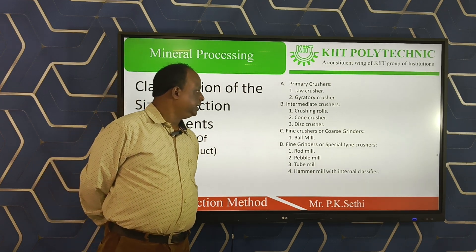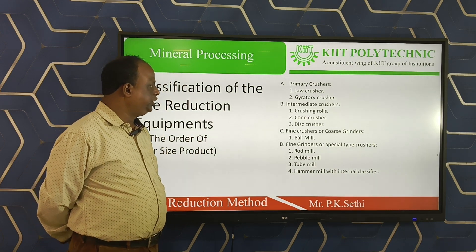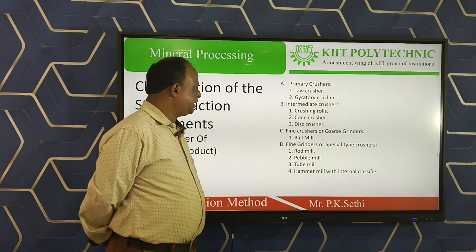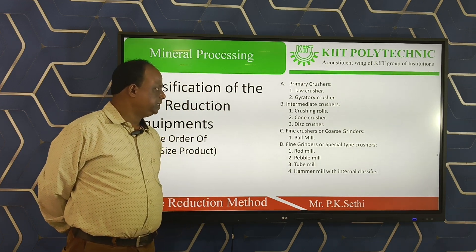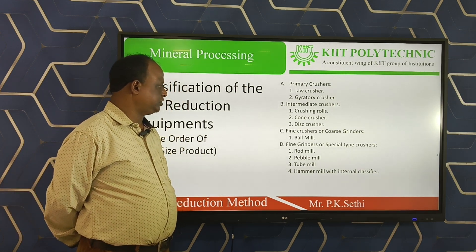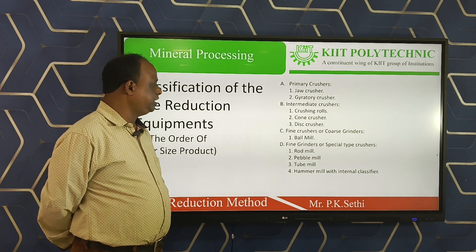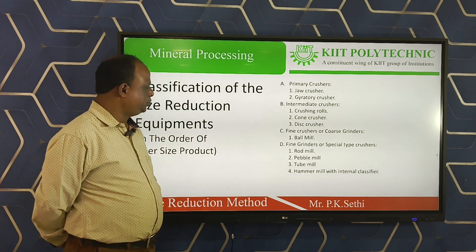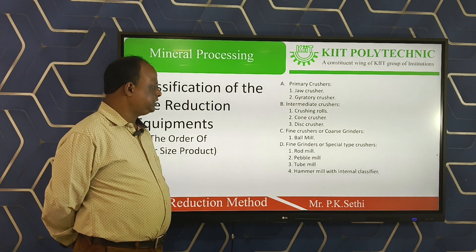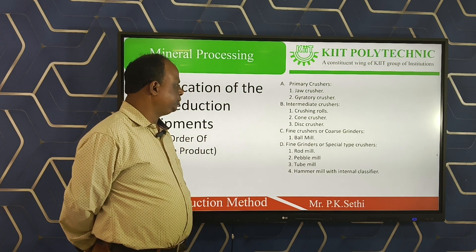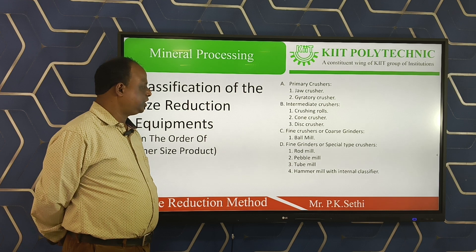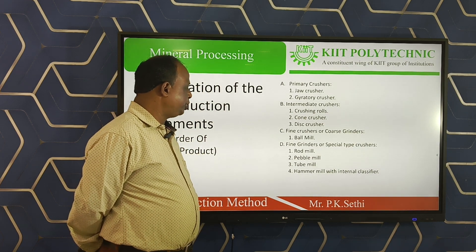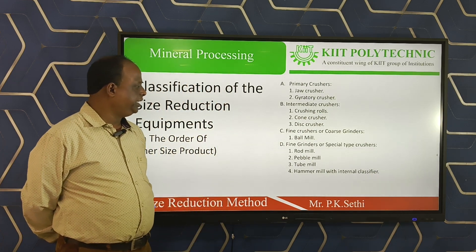The material is crushed by the jaw crusher or gyratory crusher to reduce the size of the minerals. Intermediate crusher means it reduces the primary crusher product to a smaller size again. For fine crusher or coarse grinder, when we need a very small size product, we use the ball mill to reduce the size of the minerals. Fine grinders or special type of crushers use the rod mill, pebble mill, tube mill, and hammer mill to reduce materials to very fine particles.